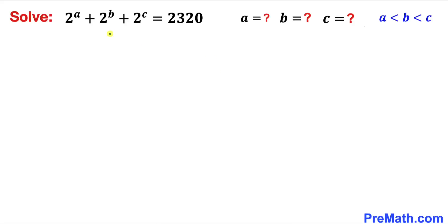Welcome to pre-math. In this video we are going to solve this given exponential equation: 2^a + 2^b + 2^c = 2320. In other words, we are going to find the value of a, b, and c, where a is less than b and b is less than c.